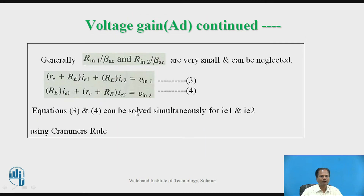Generally, the values of RIN1/βdc and RIN2/βdc are very small. For simplicity, they can be neglected. Rewriting: (RE + RE)·I1 + RE·I2 = VIN1 — this is equation 3. The second equation becomes RE·I1 + (RE + RE)·I2 = VIN2 — this is equation 4. Equations 3 and 4 can be solved simultaneously for I1 and I2 using Cramer's rule.